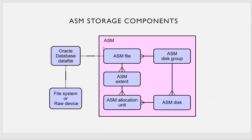A group of ASM disks forms my ASM disk group — that is your data, redo, and FRA. So this is the logical structure of ASM and the physical structure of the database. In simple words: at the ASM level, I have ASM disks. Using those ASM disks, I create ASM disk groups. An ASM disk is a combination of ASM allocation units; a group of allocation units makes an ASM extent, and a group of ASM extents makes ASM files. These ASM files reside on the ASM disk group. And these ASM disks are your OS disks — either raw device, OCFS, or whatever formatted disk.